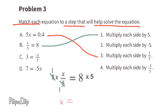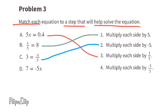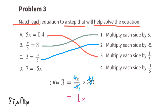Part c: 3 equals negative x over 5, or negative x divided by 5. We need to multiply both sides by negative 5, because a negative times a negative equals a positive, and we want x to become positive. Multiplying both sides by negative 5 makes x a positive 1x, or positive x.